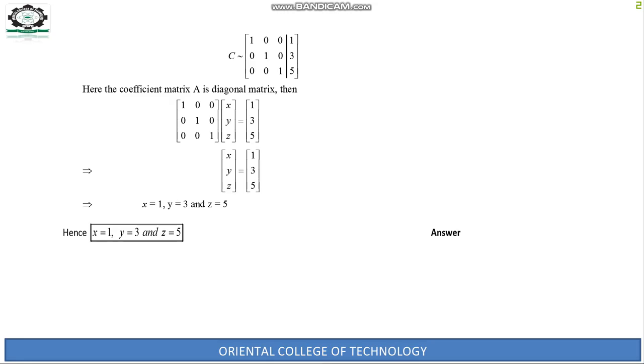The coefficient matrix is now a diagonal matrix. Hence from the equation Ax = B, we get x = 1, y = 3, and z = 5.